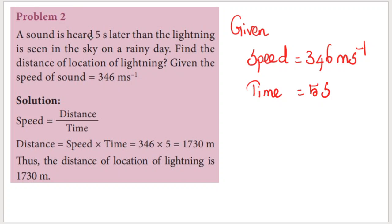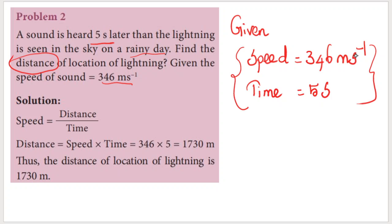Problem 2: A sound is heard 5 seconds later than the lightning is seen in the sky on a rainy day. Find the distance of the location of lightning, given the speed of sound is 346 m s⁻¹. In this problem, we are given speed and time, and we need to calculate the distance.